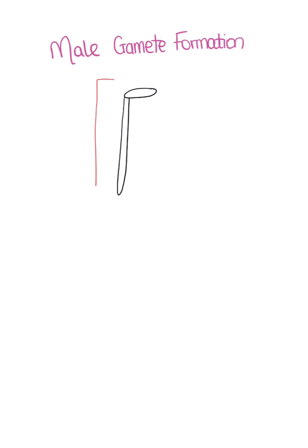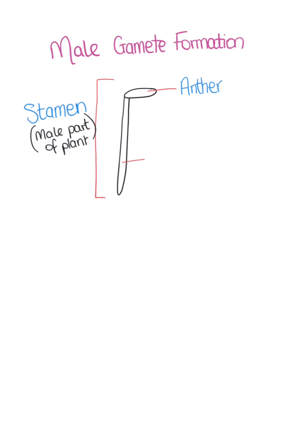This image here represents the male part of the plant, known as the stamen. The stamen is made up of two parts: the anther and the filament.